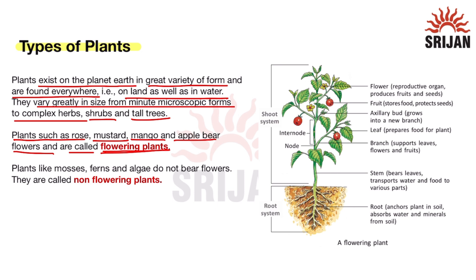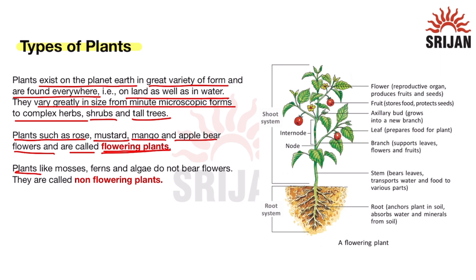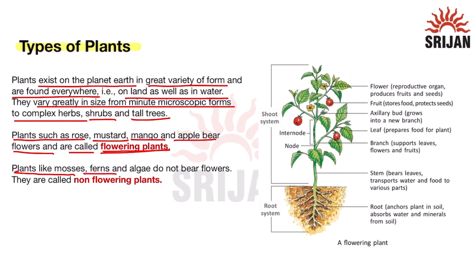Plants like mosses, ferns, and algae do not bear flowers, and they are called non-flowering plants.